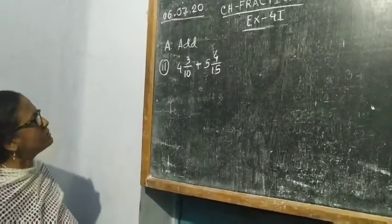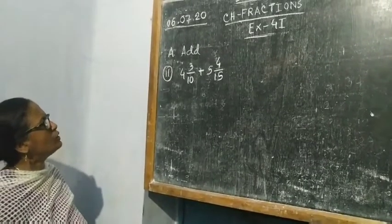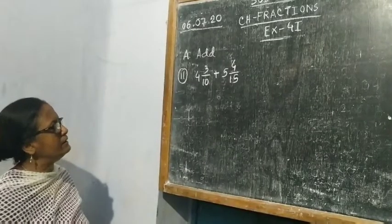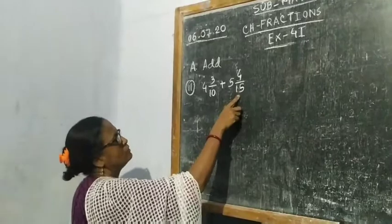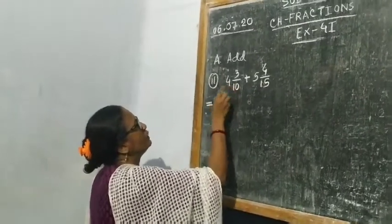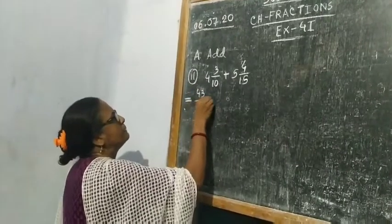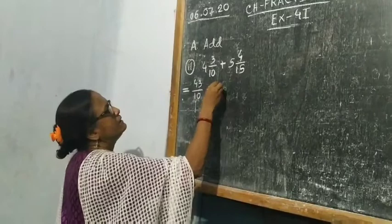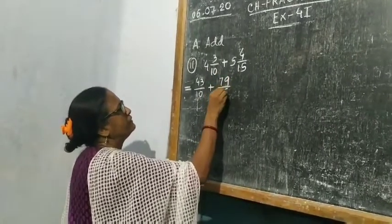Now children, let's do sum number 11. You have to add 4 3/10 and 5 4/15. First we change these 2 mixed fractions into normal fractions: 4 into 10 is 40, plus 3 is 43 by 10. Plus 5 into 15 is 75, plus 4 is 79 by 15.